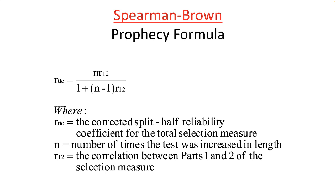As the number of items increases to a certain point, the reliability of an instrument increases. Consider an IQ test with only two questions — if you missed one, can we reliably say your IQ is 50? Probably not. In that case, your observed score is lower than your true score. Split-half reliability estimates are based on only half of the items, technically underestimating the true reliability of the instrument.